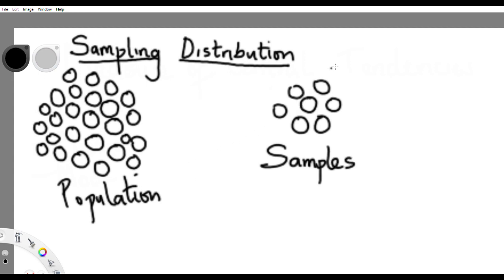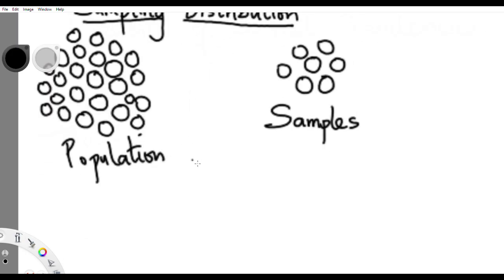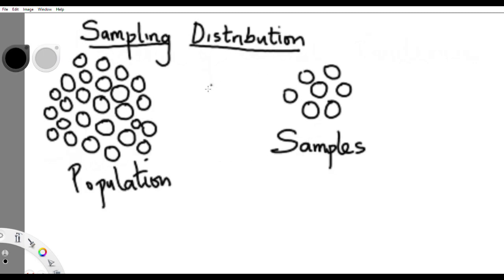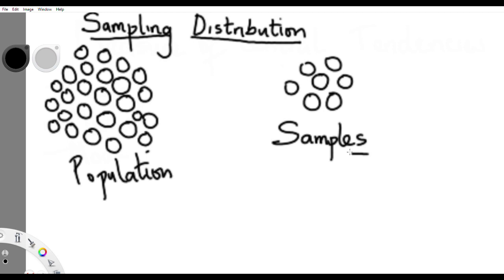That is what statistics is all about — picking out samples from the population in order to judge for the whole population. You are judging based on the samples but on behalf of the whole population. Samples are representatives of the population. When working with samples, that is called sample statistics; when working with the whole population, you call it a parameter.